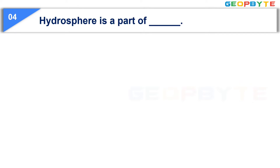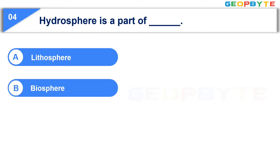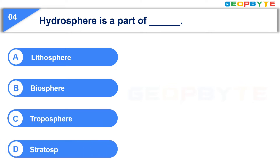Hydrosphere is a part of dash. Option A: Lithosphere. Option B: Biosphere. Option C: Troposphere. Option D: Stratosphere. Your time starts now.